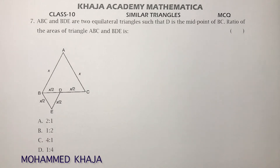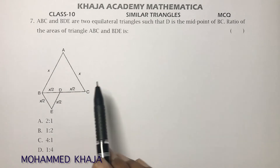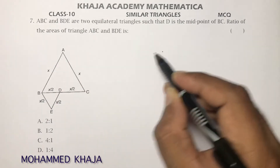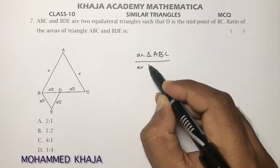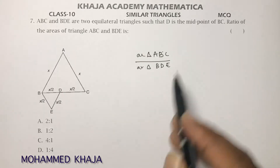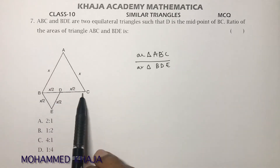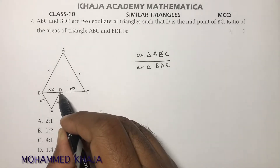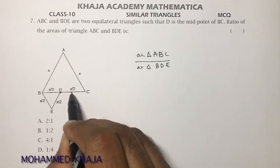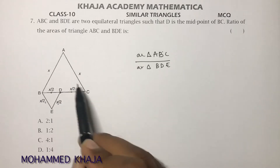Triangle ABC and triangle BDE are two equilateral triangles such that D is the midpoint of BC. We need to find the ratio of the area of triangle ABC to the area of triangle BDE. Taking the side of equilateral triangle ABC as X, then BC is also X. Since D is the midpoint, BD = X/2, so the side of triangle BDE is X/2.